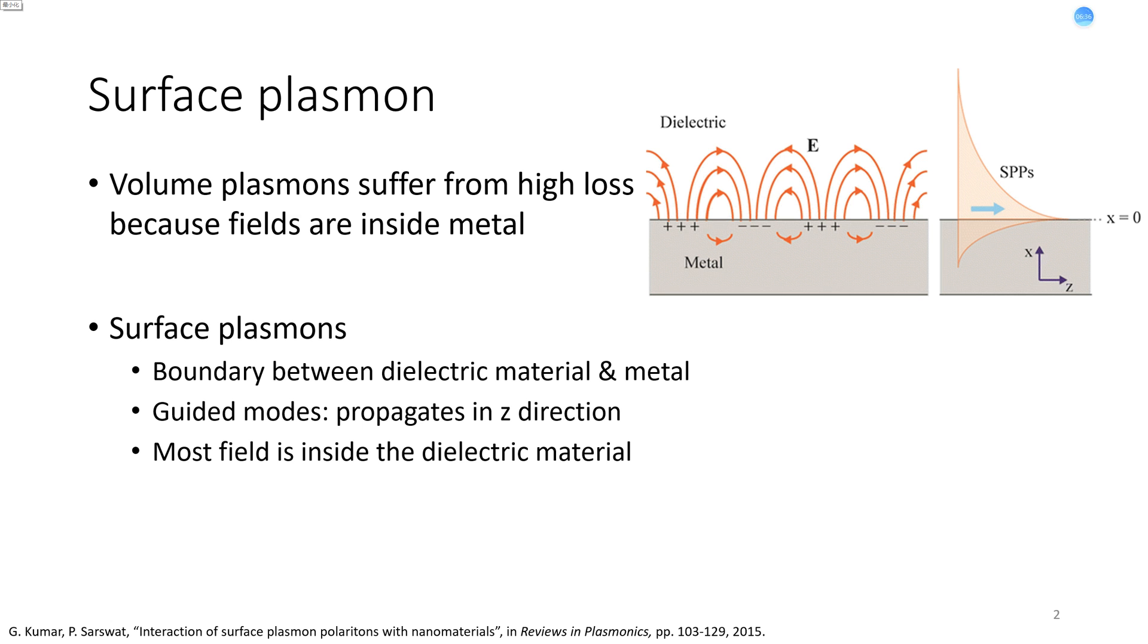While volume plasmon in bulk materials suffer from high loss, surface plasmons, which appear at the boundary between metal and dielectric material, can propagate for longer distance. Most of the field is inside dielectric material, so loss is not a big issue.